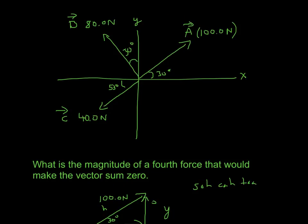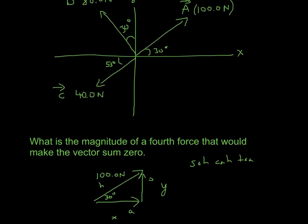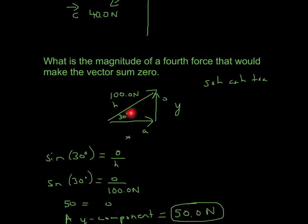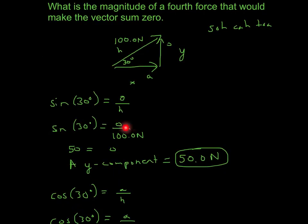Let's start with A — finding the x and y components of A. We'll do a little trig. All I did to make this triangle was shift the y-component over and bring the angle here. The side opposite is going to be opposite, then adjacent, then the hypotenuse — SOH-CAH-TOA. Since sine equals opposite over hypotenuse, and we're solving for y, we plug in the hypotenuse of 100, and we multiply each side by 100 to get 50 equals the opposite side.